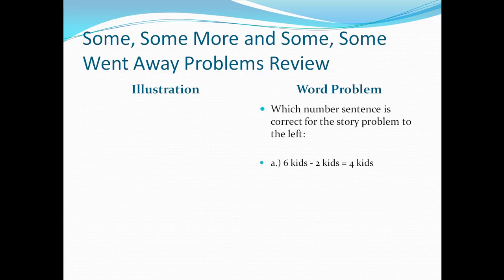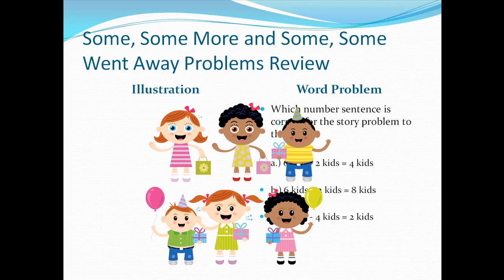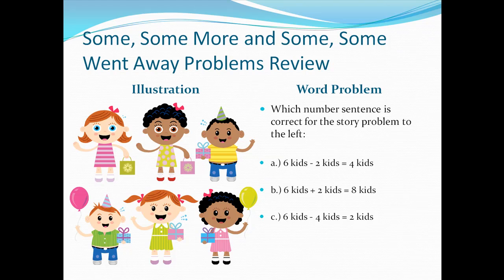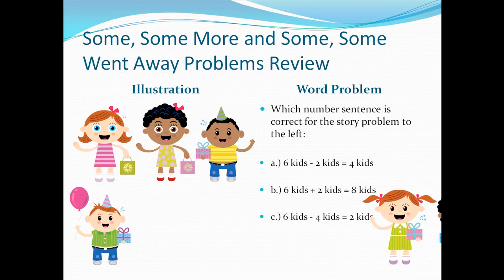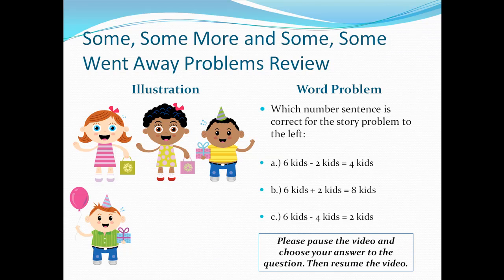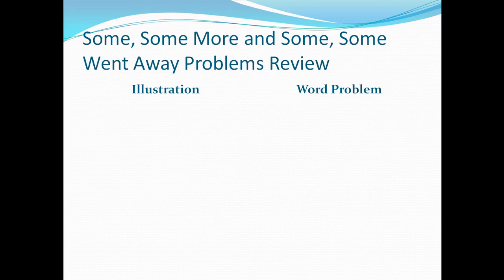Which number sentence this time? A: Six kids minus two kids equals four kids. B: Six kids plus two kids equals eight kids. Or C: Six kids minus four kids equals two kids. Watch both parts, then pause your video and make your answer choice. The correct answer is letter A: Six kids minus two kids equals four kids.